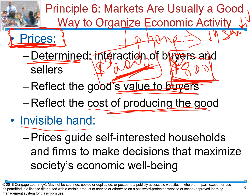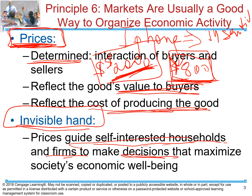The invisible hand represents self-interested households and firms making decisions about what to produce, how to produce it, and at what price to sell it. Those decisions are going to maximize our society's well-being. This is the example of market economy where government doesn't interfere. Versus the economy of the former Soviet Union, where the government was telling you what to produce, how to produce it, and at what price to sell it — in those economies, the well-being of households was not maximized in centralized economy.